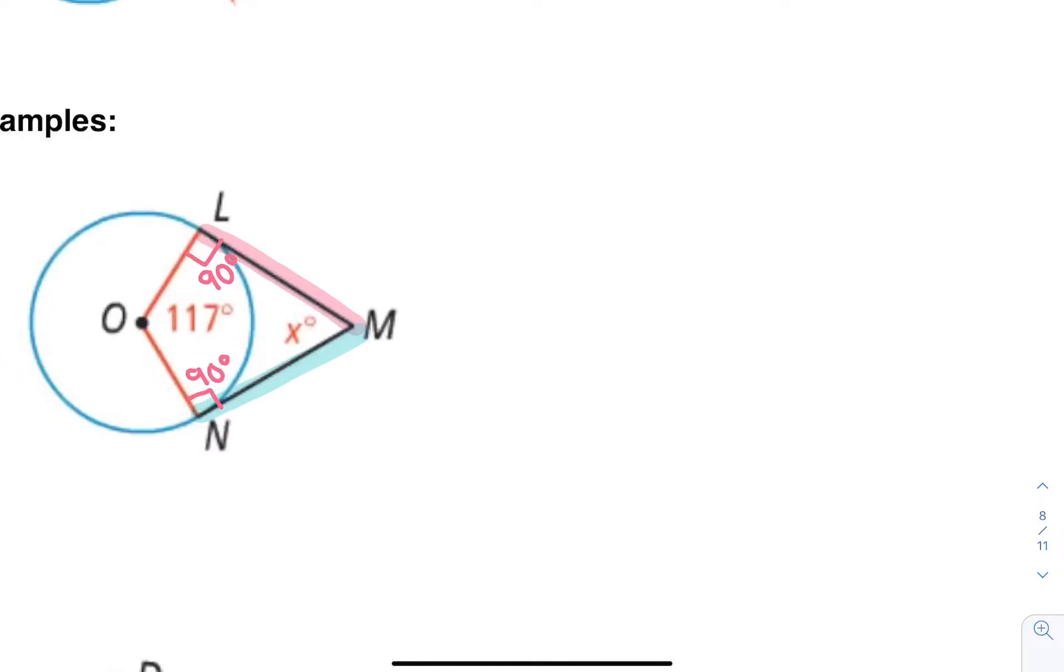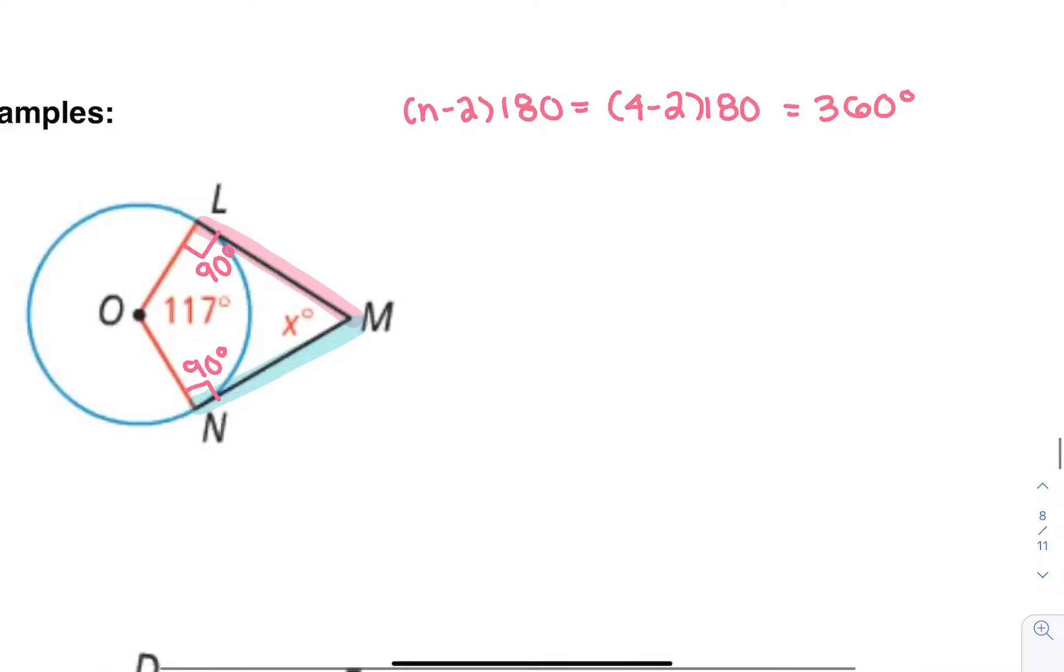Remember back when we did polygons, we had that formula for figuring out how many angles is in a polygon based on the number of sides? It was N minus 2 times 180. In this case, 4 minus 2 times 180 is 360 degrees. Four-sided figures add to 360 degrees, and we have a four-sided figure.